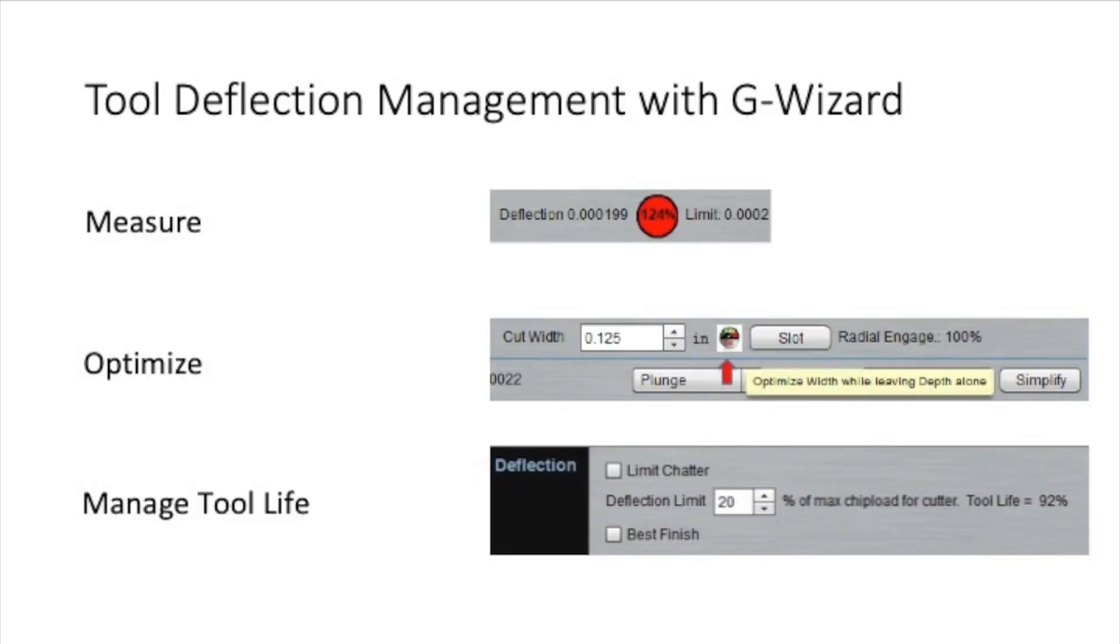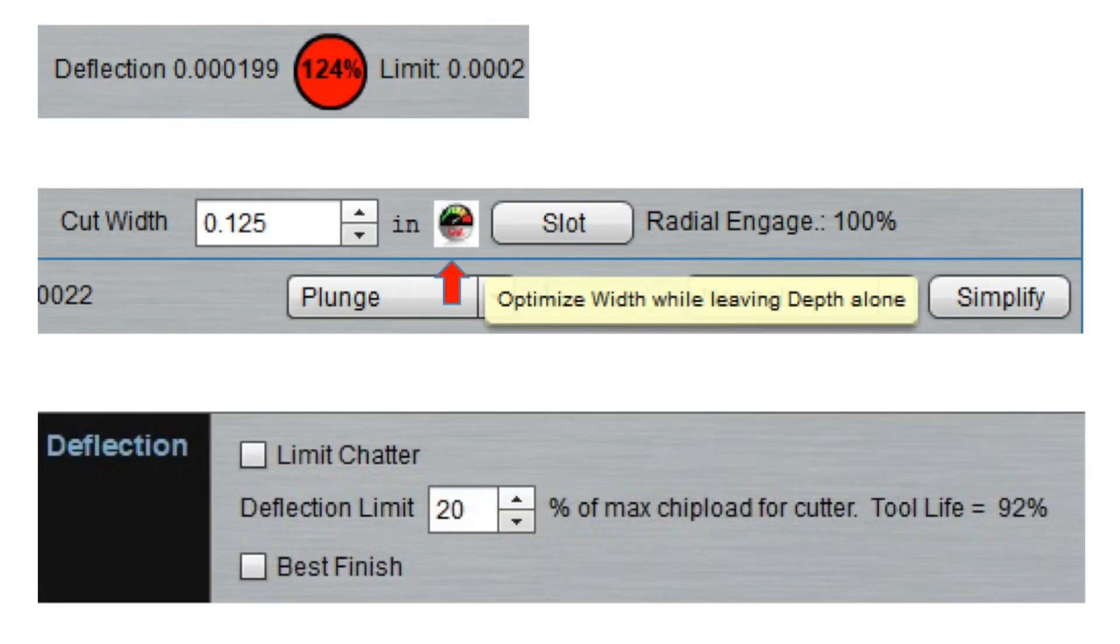Here's what you really need to manage tool deflection. There's three tools and I'm going to show you what they look like in our G-Wizard Feeds and Speeds Calculator as an illustration. First, you need to know how much deflection there is and you need to monitor that deflection relative to some limit you've set.